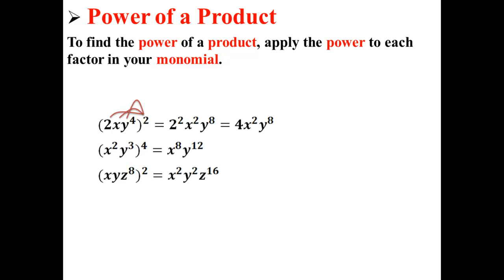Let's solve for these. For the first expression, (2xy^4)^2, we simply multiply 2 by every exponent. That gives us 2^2 × x^2 × y^8, or simply 4x^2y^8.